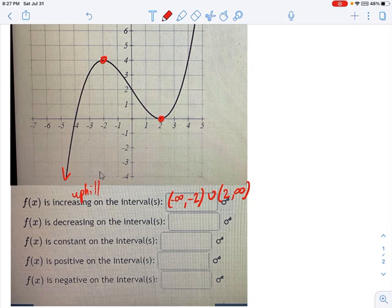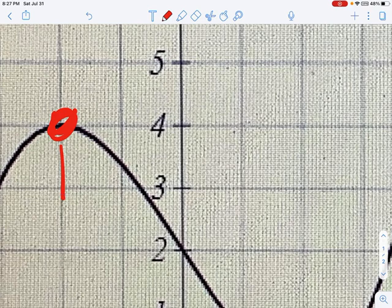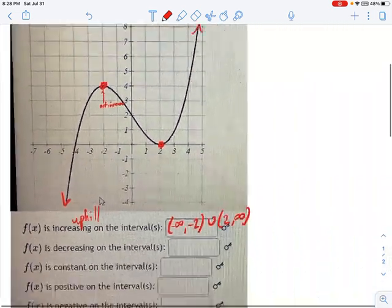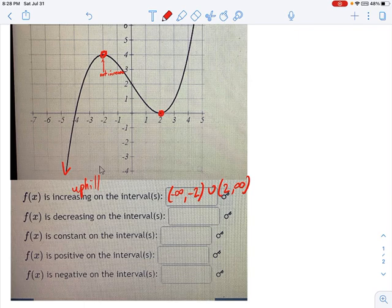And the next section where it's uphill is 2 to positive infinity. Notice that I'm not using square brackets when I talk about increasing, decreasing. And the reason is, if you zoom in on this point right here, if you're actually on the point right there, you're not increasing. That's not an increase. It's kind of like level. It's a slope of 0. So that's not an increase right there.